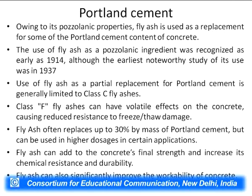As far as uses in Portland cement is concerned, because fly ash has some pozzolanic properties, it is used as a replacement for some of the Portland cement content of concrete. The use of fly ash as a pozzolanic ingredient was recognized as early as 1914, although the earliest noteworthy study of its use was in 1937. Use of fly ash as a partial replacement for Portland cement is generally limited to Class C fly ash; Class F fly ashes can have volatile effects on concrete, causing reduced resistance to freeze-thaw damage. Fly ash often replaces up to 30 percent by mass of Portland cement but can be used in higher dosage in certain applications.